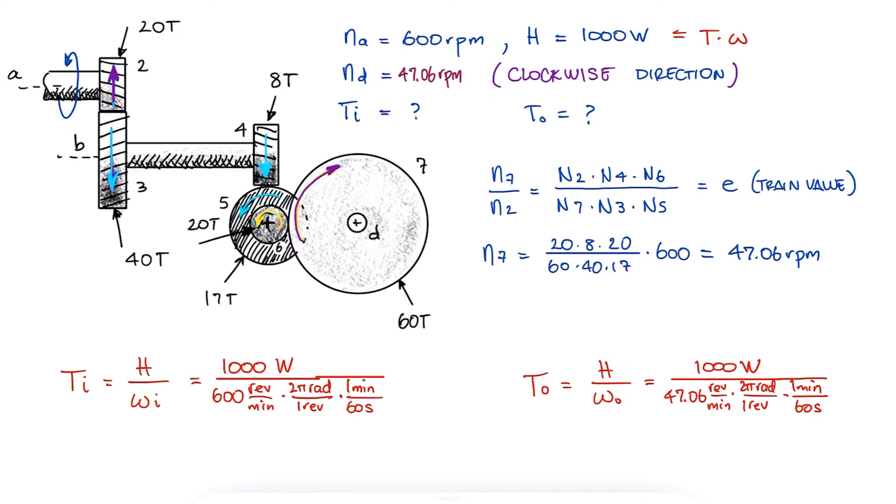The input torque would be equal to 15.9 Newton meters, and the output torque would be equal to 202.9 Newton meters. Notice that the mechanical advantage is the reciprocal of the train value for systems with 100% efficiency.